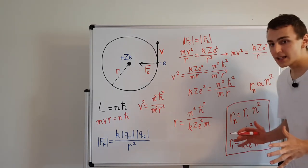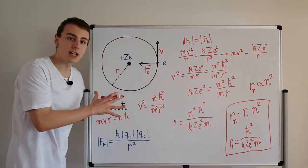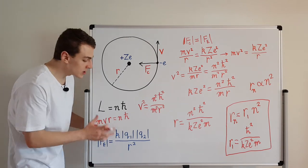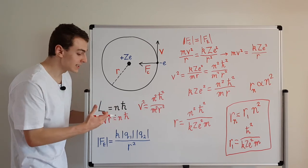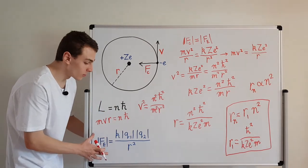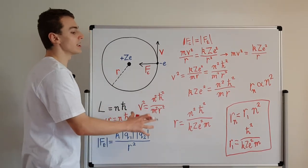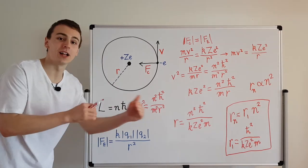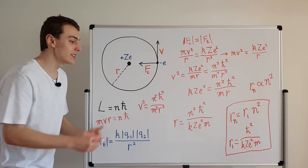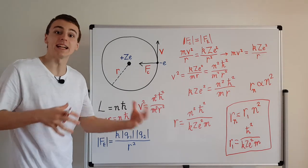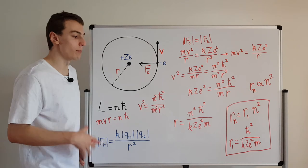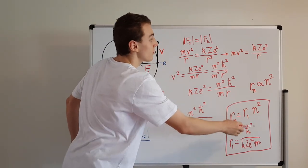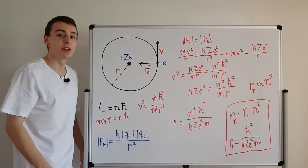To summarize how we got this relationship: we started with the visual Bohr model where the electron moves in circular orbits like a mini solar system. We used angular momentum quantization from quantum mechanics and Coulomb's law from classical electromagnetism. Combining these, we derived two expressions for v² and solved for the radius, showing that it takes discrete values indexed by the integer n. We'll be using this squared relationship and this formula in later videos in this series.